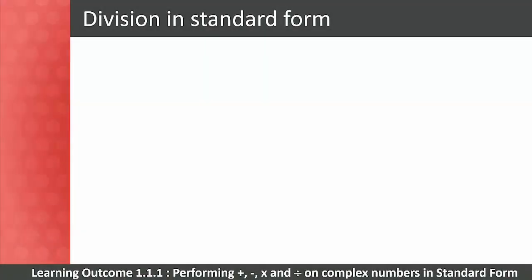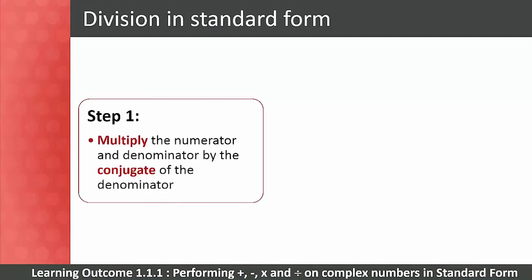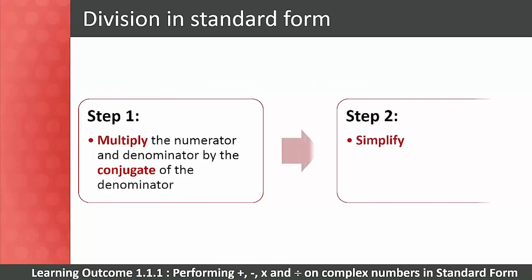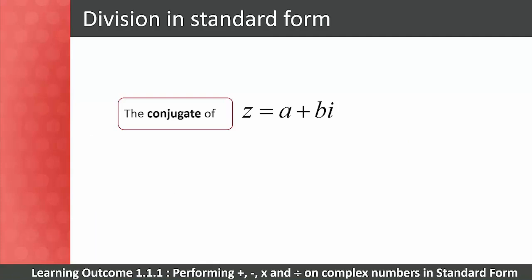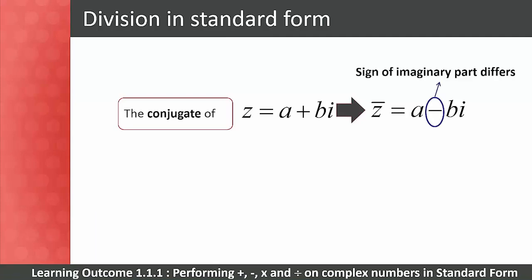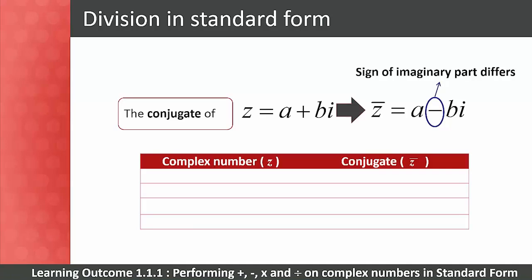Let's now move on to division in standard form. To divide complex numbers in standard form, follow these steps: Step 1 — multiply the numerator and denominator by the conjugate of the denominator. Step 2 — simplify the answer. Remember, the conjugate of a complex number differs only in the sign of the imaginary part.